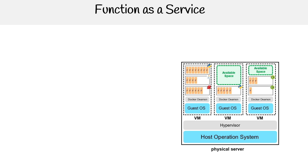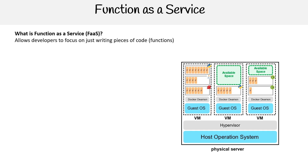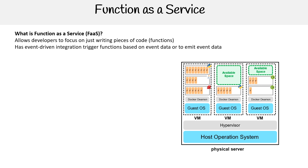Let's talk about function as a service, also known as FaaS. What is function as a service? It allows developers to focus on just writing pieces of code, also known as functions. It has event-driven integration — trigger functions based on event data or to emit event data. So it's not just a matter of having a piece of code that you write in a box, but the fact that it has to be event driven.